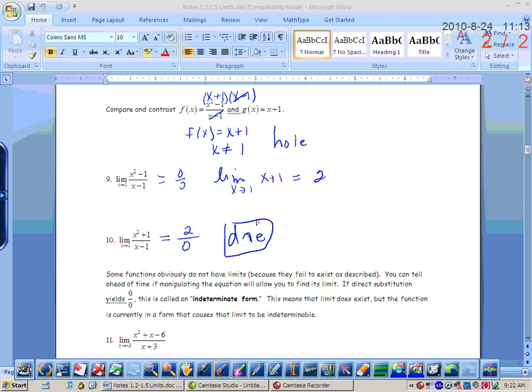Alright, so some functions obviously don't have limits because they fail to exist. And we talked yesterday about the three main reasons why we wouldn't have a limit that exists. And you can tell ahead of time if manipulating the equation will allow you to find its limit. If direct substitution yields 0 over 0, that's called indeterminate form, and that means that the limit exists, but it's in a form where you can't see it right then. So you're going to have to manipulate it.